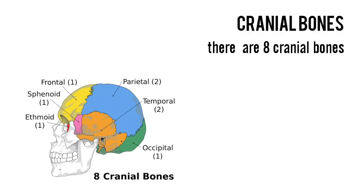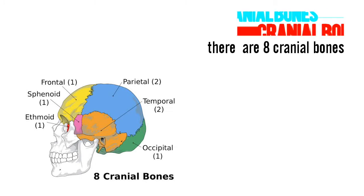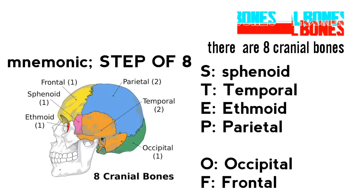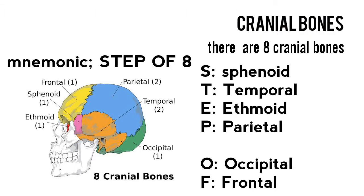The cranial bones. Your skull has 8 cranial bones that form the cranial vault. You don't want to confuse them with the facial bones, so you can remember them with this mnemonic: STEPOF 8. Each first letter stands for a cranial bone, and the number 8 reminds you that there are 8 of them. Note that parietal and temporal bones are paired bones.